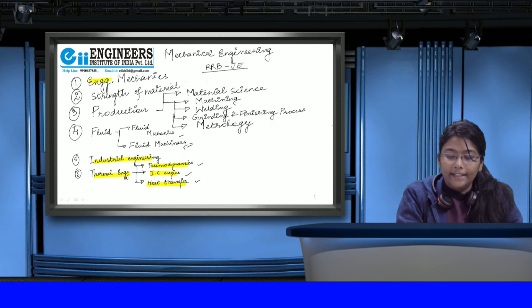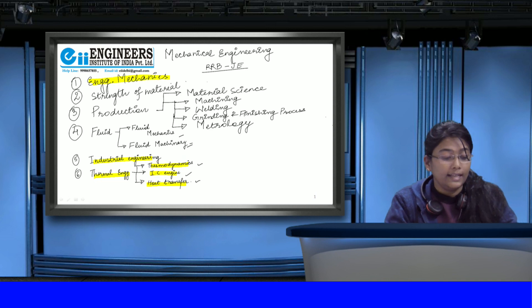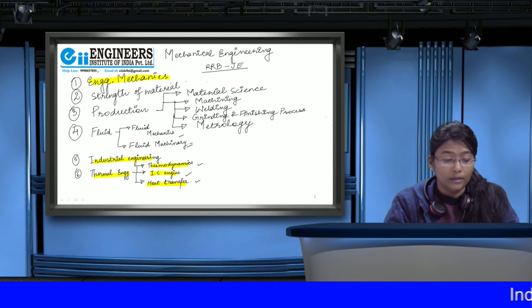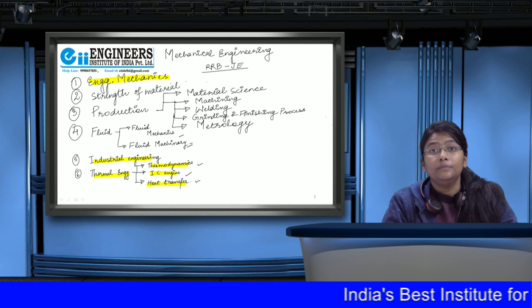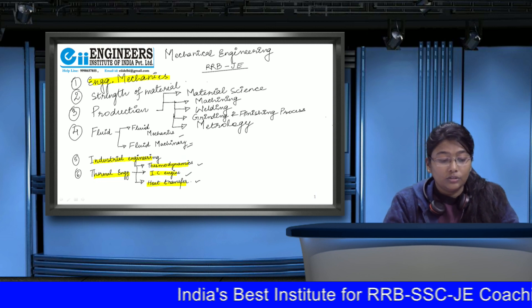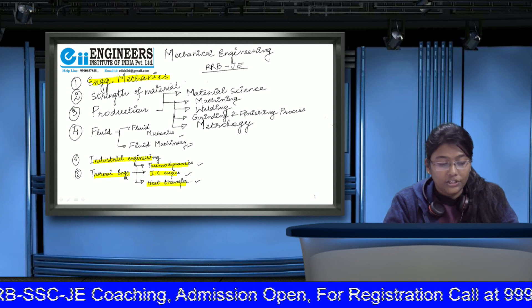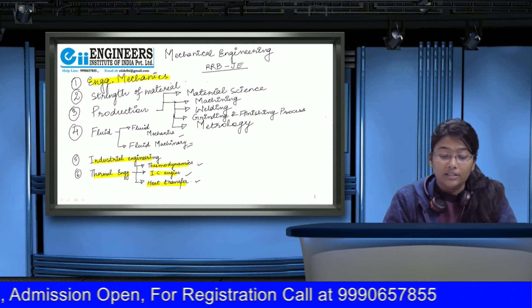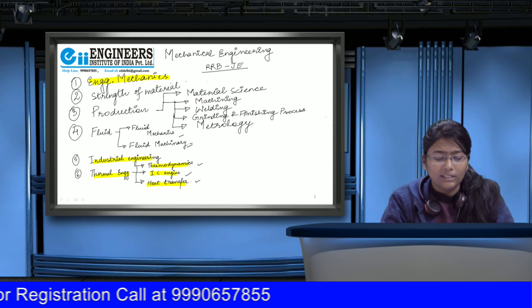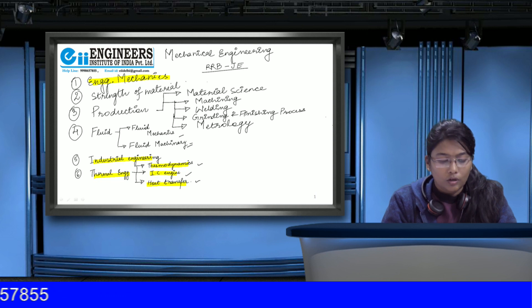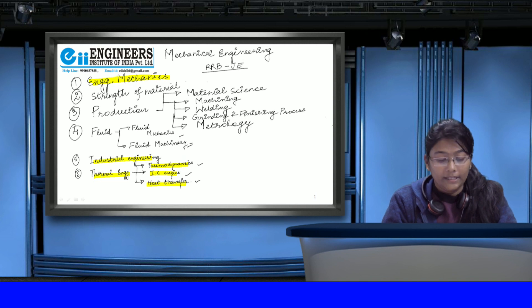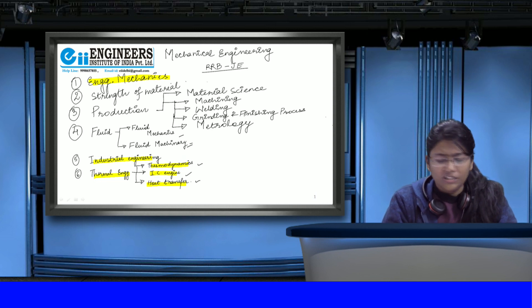In engineering mechanics, the syllabus includes resolution of forces, equilibrium, vectors, parallelogram law, triangular law, couples, and definitions of static and dynamic friction. After that, you have to study moment of inertia, radius of gyration, and I-sections, channel, T-section, and L-section. Then Newton's laws of motion without derivation, motion of projectile, D'Alembert's principle, law of conservation of energy, and law of conservation of momentum.